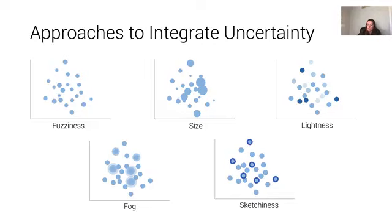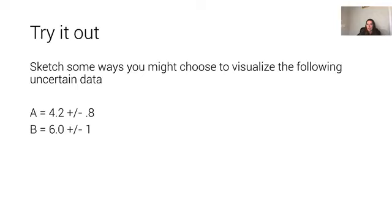And with that being said, what I'd encourage you to do is go ahead and try it out. There are many, many different ways of representing uncertain data. So grab a pencil and paper and sketch out as many ways as you can think of to visualize the following uncertain data, which consists of just two measures, measure A, which is 4.2 plus or minus 0.8, and measure B, which is 6.0 plus or minus 1.